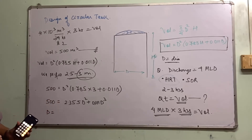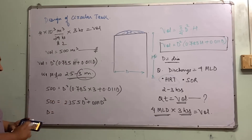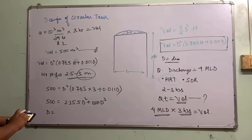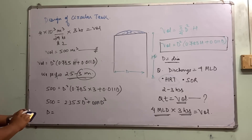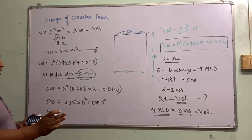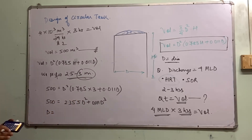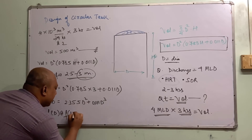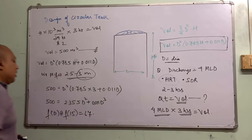Using trial and error without a scientific calculator: try D = 15. F(15) = 0.011 × 15³ + 2.355 × 15² = 567. Since 567 − 500 = 67, D is too large. So D should be less than 15.